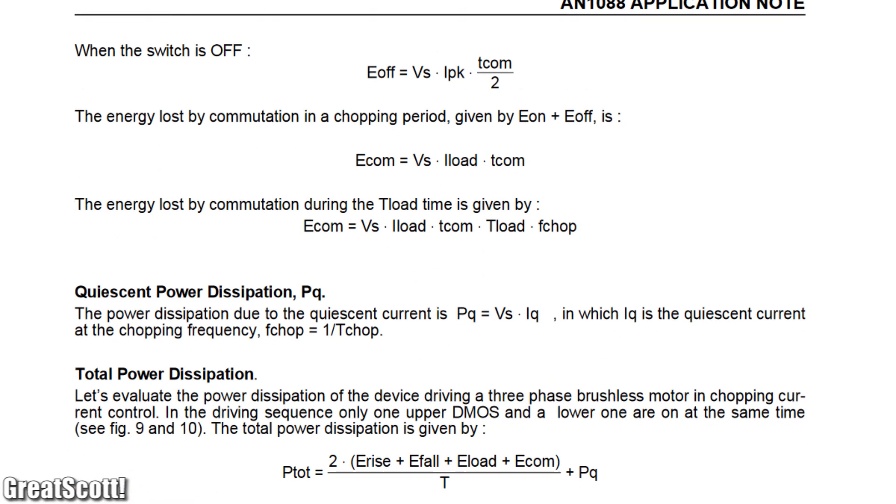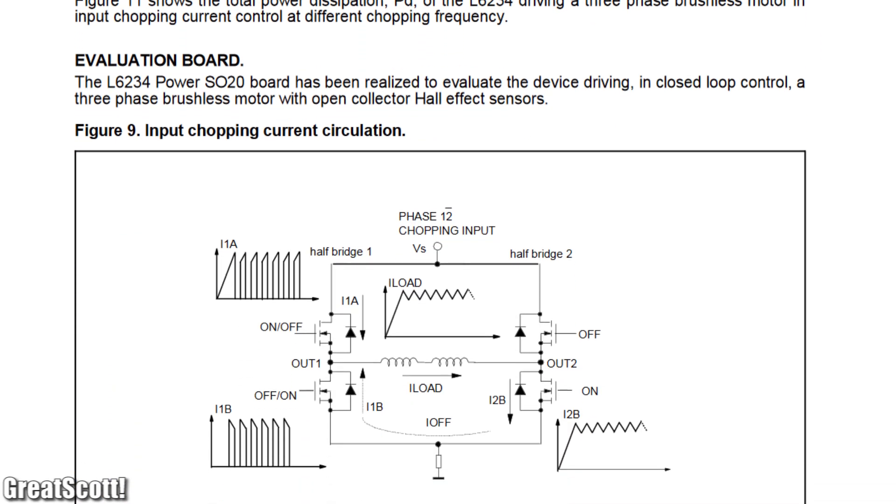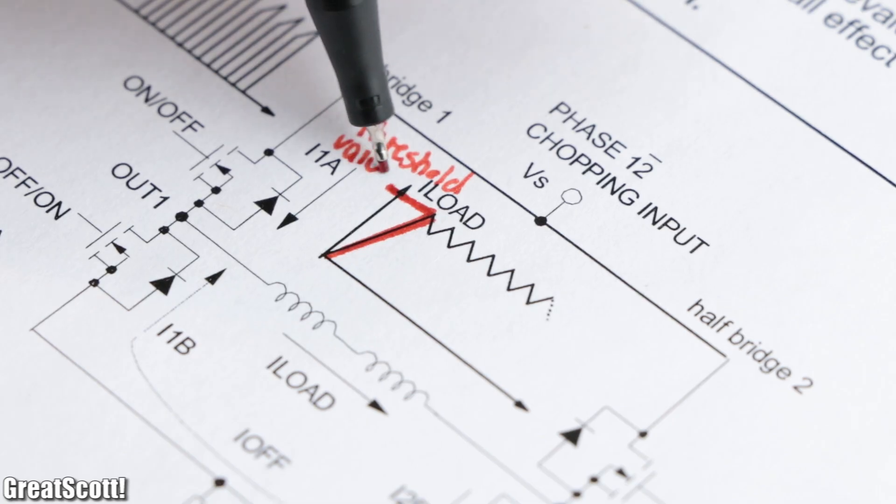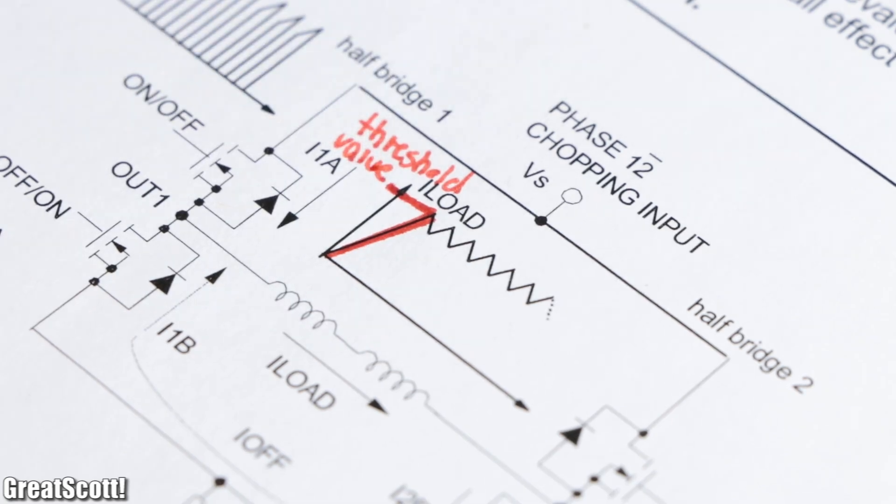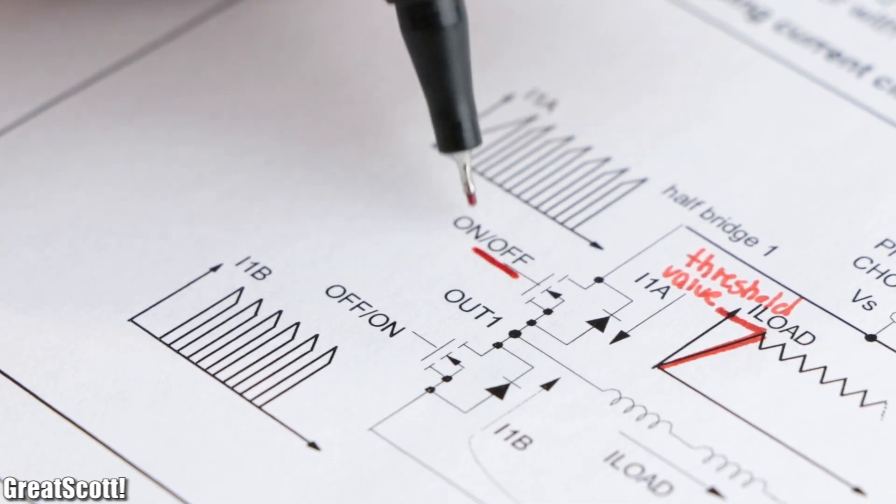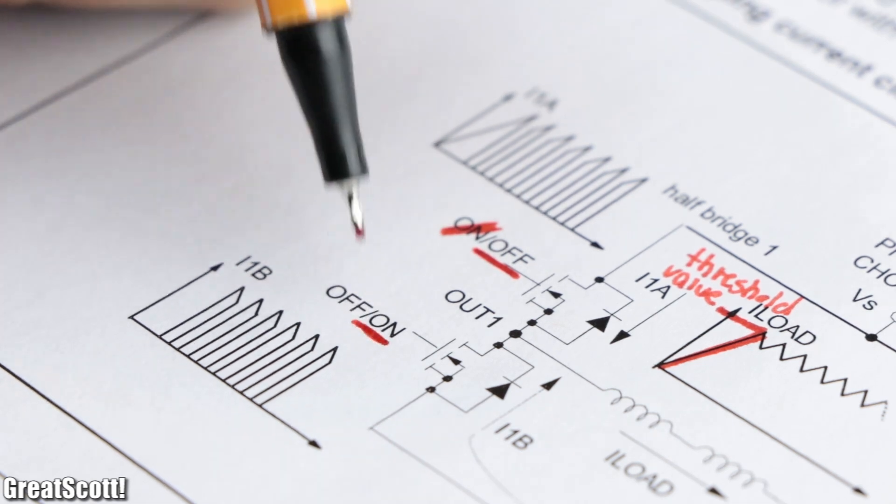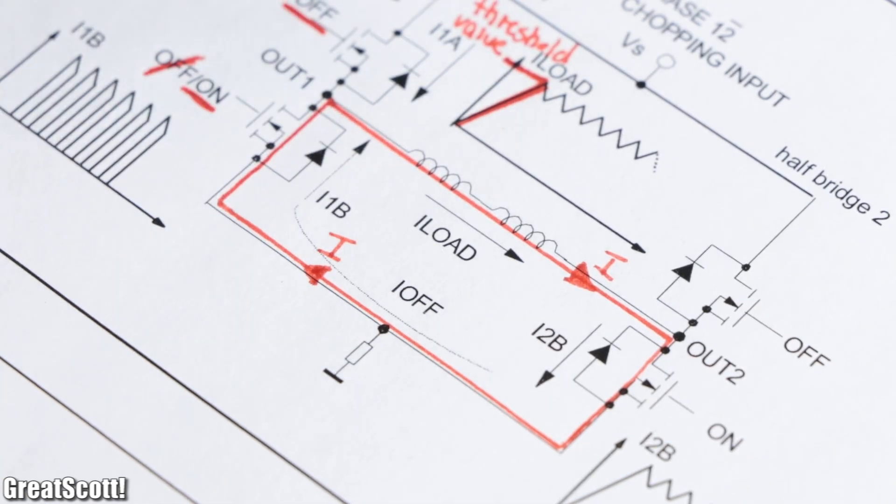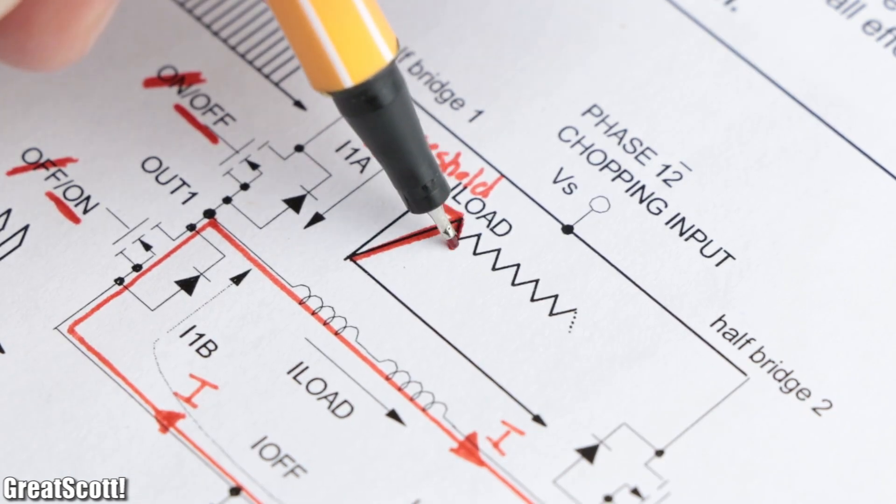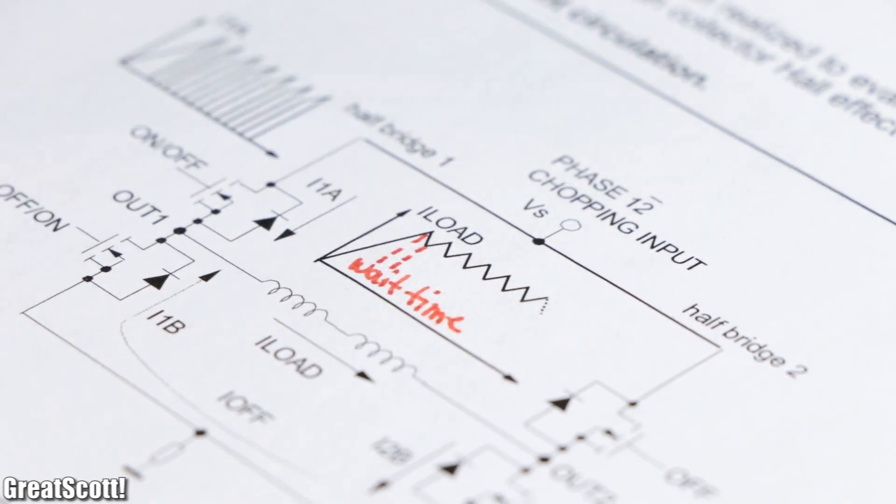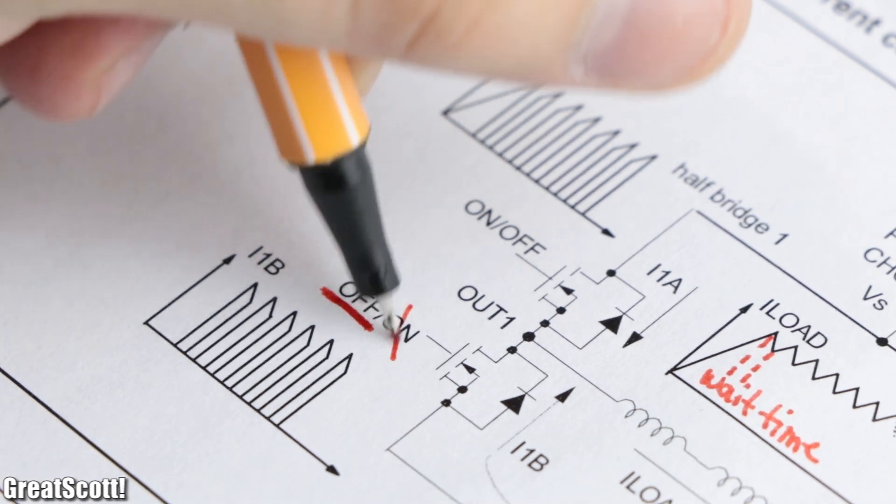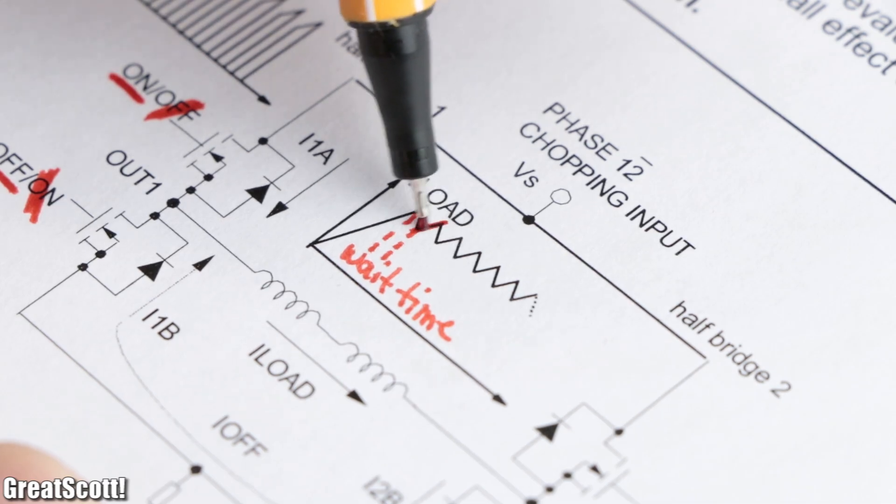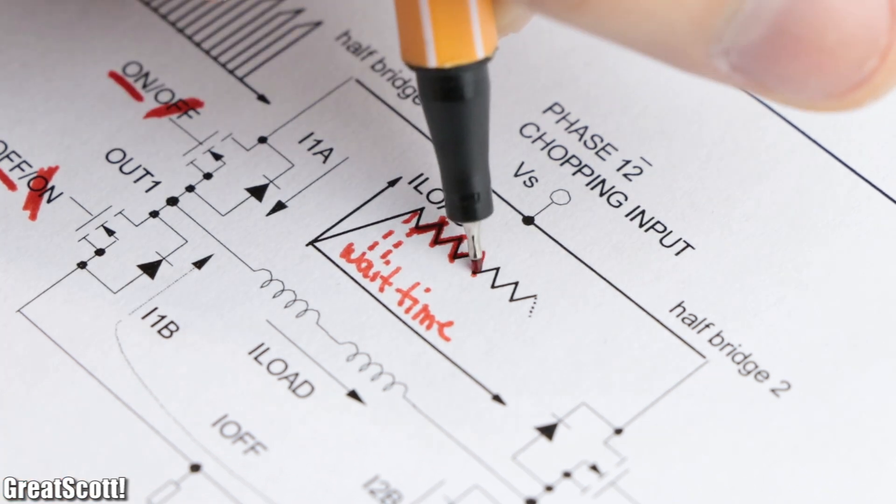To implement this feature, the datasheet of the L6234 presents us an application guide. As soon as the current reaches a threshold value, we simply deactivate the high side MOSFETs and activate the corresponding low side one so that the two coils are shorted to one another and thus decrease their current flow. After a set wait time, the low side one turns off, the high side one reactivates, and the current rises through the coils once again until the process repeats.